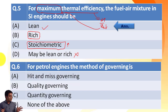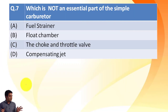The next question: for petrol engines, the method of governing is — in petrol engines and all types of engines, we measure the fuel in quantity, which we call average fuel consumption. So the straightforward answer is quantity governing.